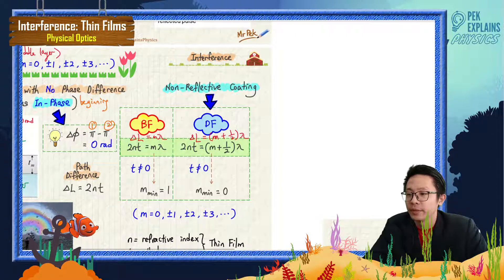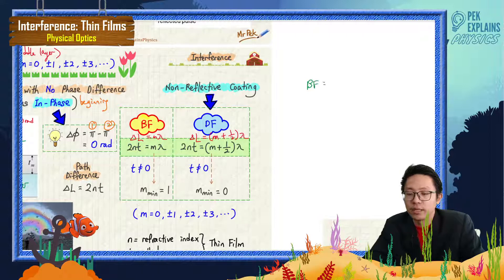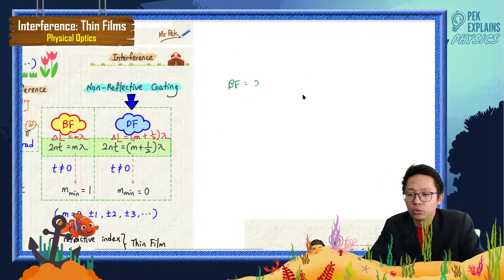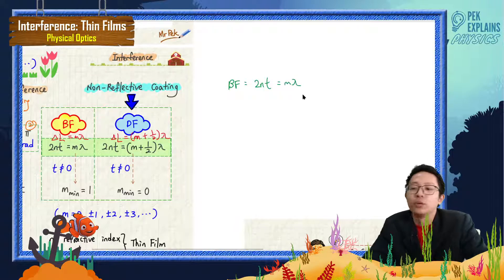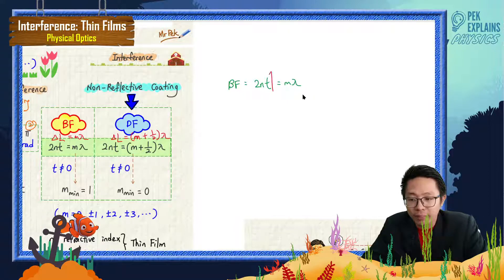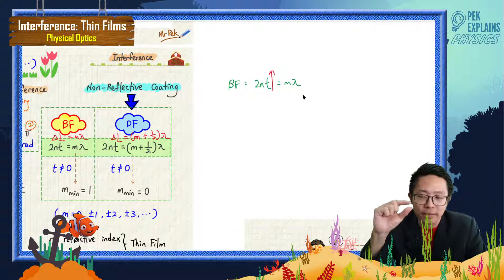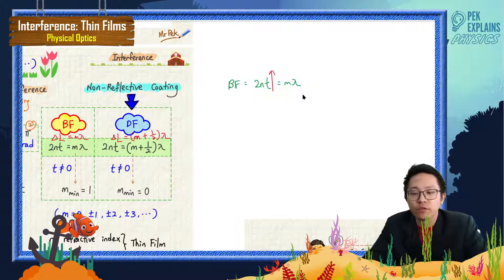To form the bright fringe for this case, the formula is 2NT = mλ. The thickest part of the oil film will form a bright fringe for the longest wavelength.